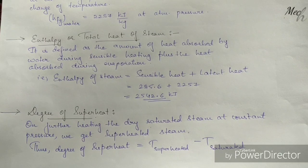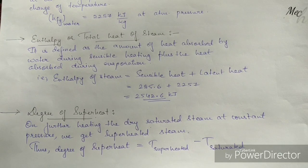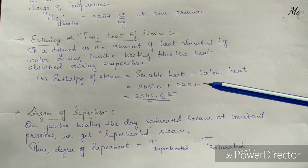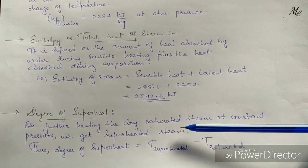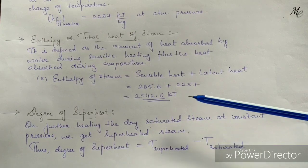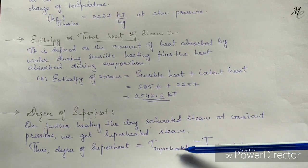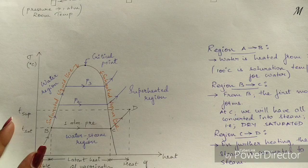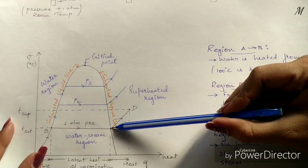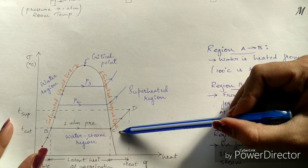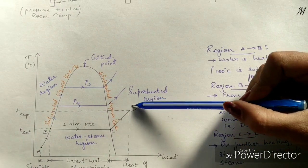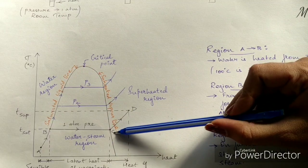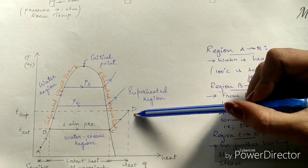The next important term is the degree of superheat. When dry saturated steam is heated further at constant pressure, we get superheated steam. The degree of superheat equals the temperature of the superheated condition minus the saturation temperature, i.e., T_superheated − T_saturated. In the graph, point C indicates the saturated condition and point D indicates the superheated condition; line CD represents the degree of superheating.